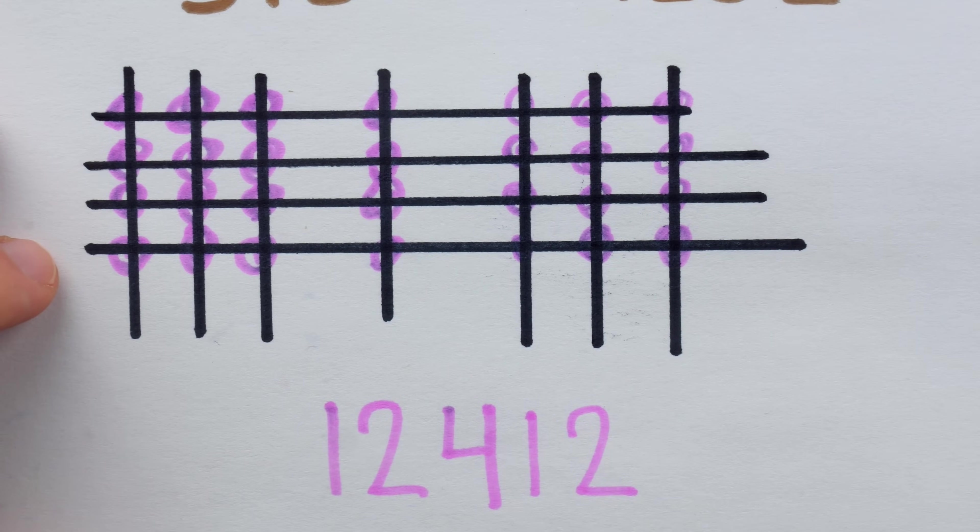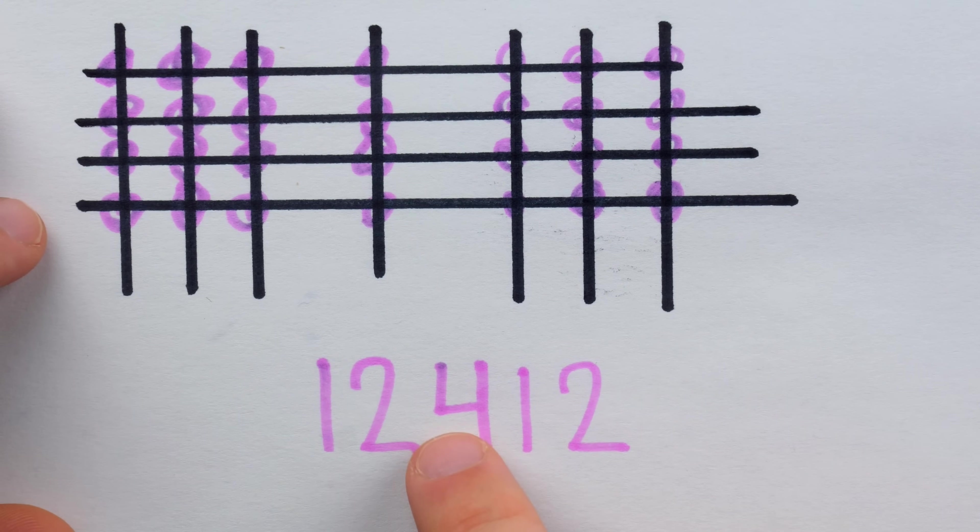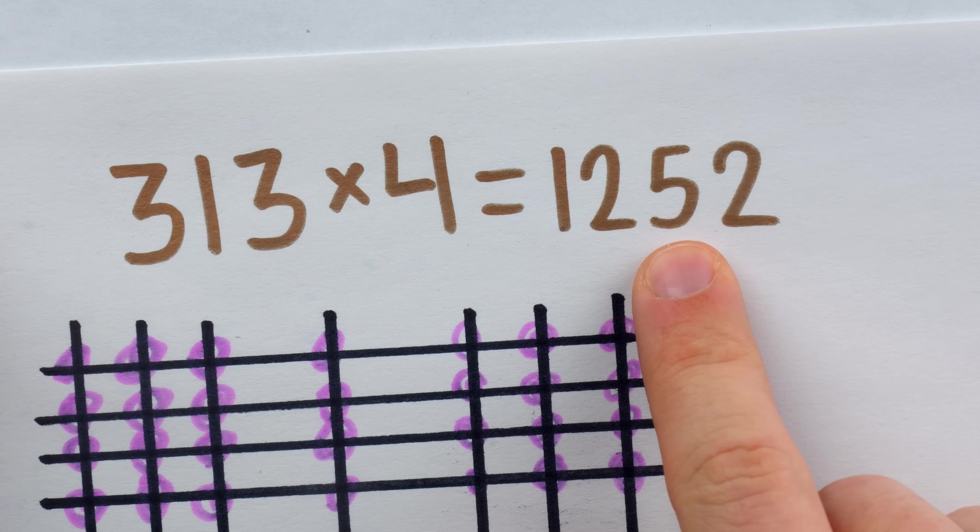But you can see we got the wrong answer using this method because we didn't realize this 4 and this 1 should actually be in the same place value, they should come together as 5.